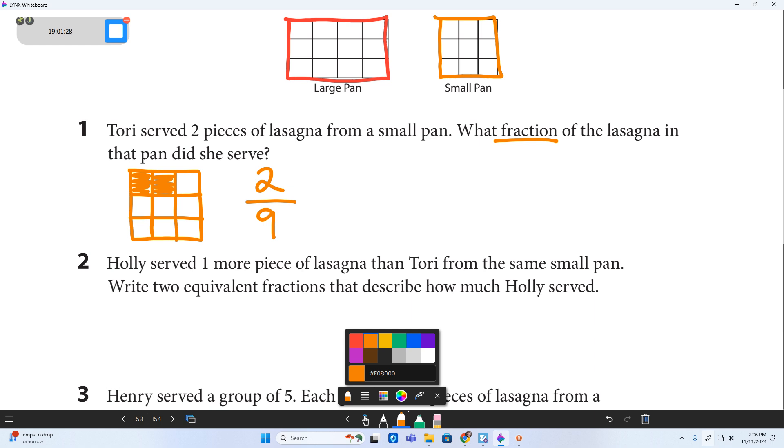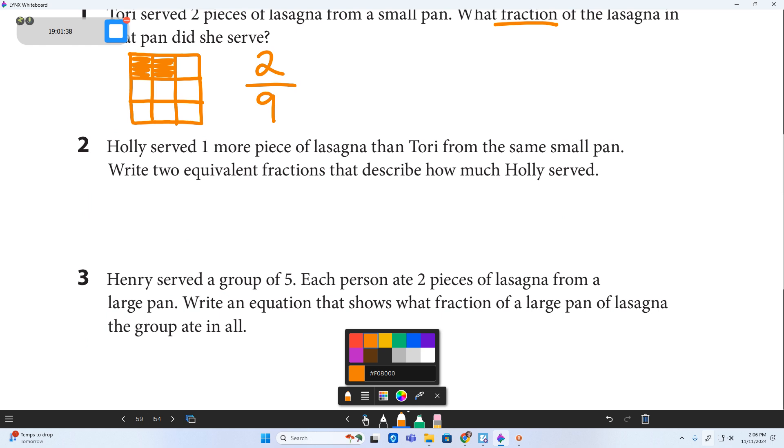Alright, moving on. Holly served one more piece of lasagna than Tori. So instead of serving two pieces, she's serving three pieces, right? Because it's from the same small pan. So let me go ahead and draw that. Alright, so we've got the two pieces that Tori did. And then we've got one more piece that Holly served. So I can see those three pieces. Now, this is a little bit different.